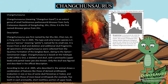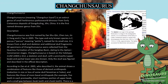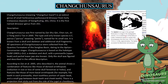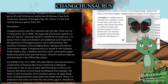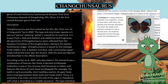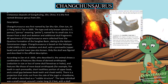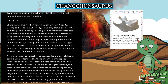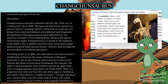All specimens of Changchunsaurus were collected from the Quantou Formation of the Songliao Basin, dating to the Aptian-Cenomanian stages. Changchunsaurus is based on the holotype CLAMEO 403-JZN2, a skeleton and skull, with a pre-maxilla, upper beak, and partial lower jaw also known.